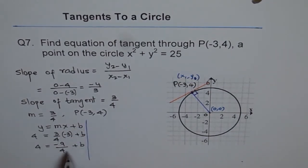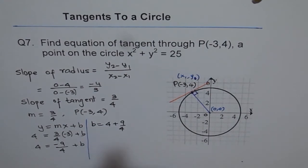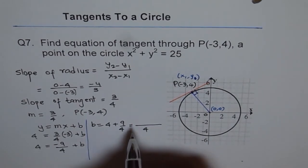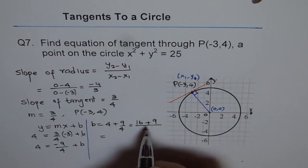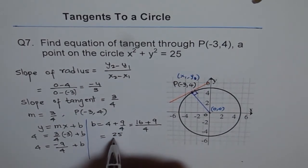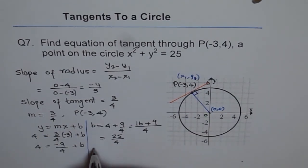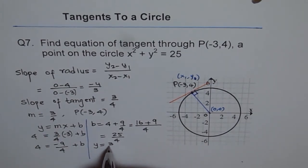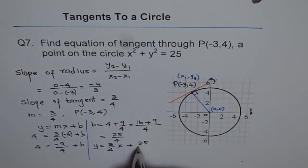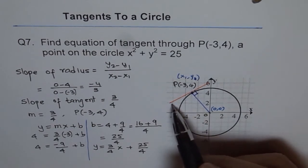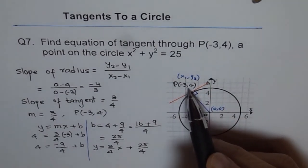So let's take it to this side and do rest of the work. So we get b equals to 4 + 9/4, so we can take 4 common. So we get 4 common, 16 + 9, which is 25, so we get 25/4 as the value of b. So therefore we can now write the equation of our tangent line, y equals to slope, which is 3/4, x plus b, which is 25/4. So that is the equation of the line in slope intercept form, which is tangent to the circle at the point (-3, 4).